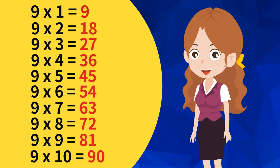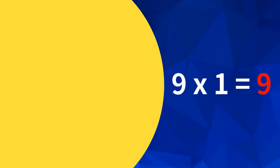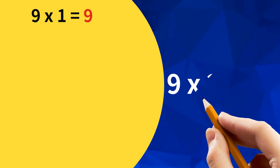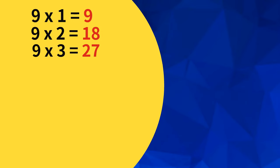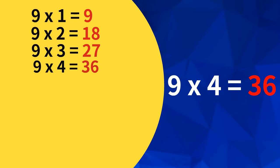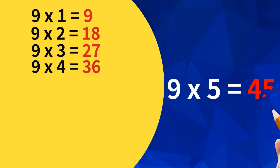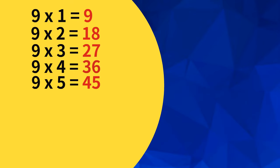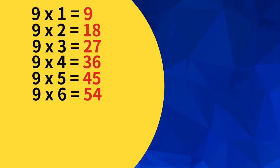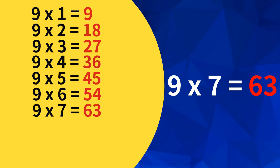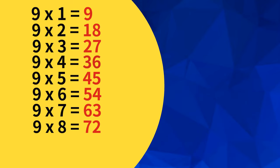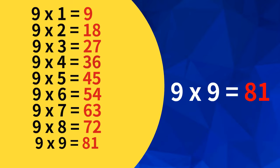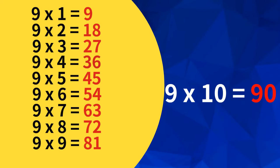Now, let's speak together. 9 1's are 9. 9 2's are 18. 9 3's are 27. 9 4's are 36. 9 5's are 45. 9 6's are 54. 9 7's are 63. 9 8's are 72. 9 9's are 81. 9 10's are 90.